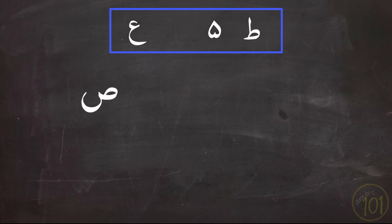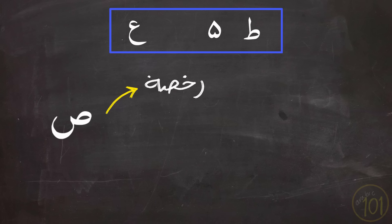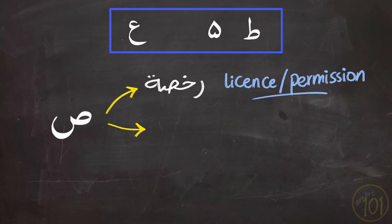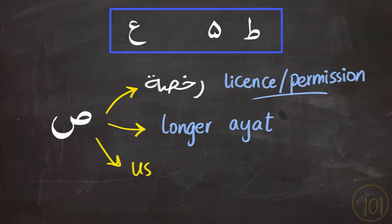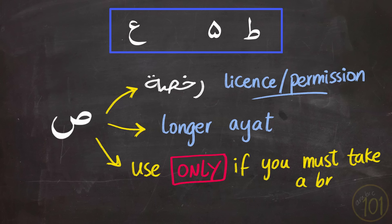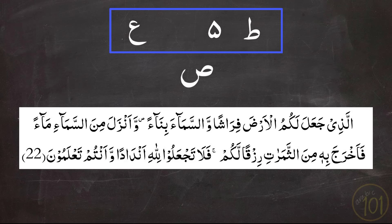The next symbol is Sad, an abbreviation for the word rukhsa, meaning a license or permission. This symbol is usually found in longer ayat, indicating that you may only stop or pause if you have to take a breath — but if you don't have to, you should keep on reading. It is not the best spot to stop unless you really need a breath. In this longer ayah, this spot indicates you can take a breath here, but the meaning flows better if kept connected.